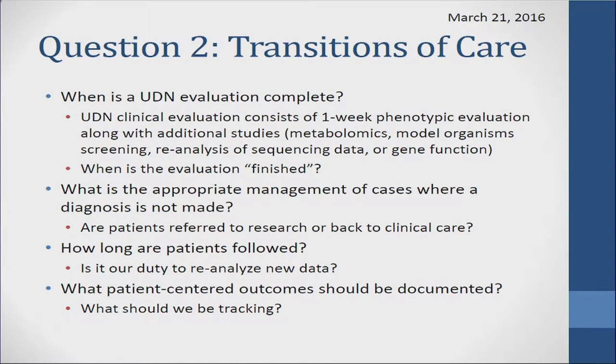Our first question is: when is a UDN evaluation complete? We've spent a great deal of time talking about the intensive clinical evaluation, and we'd like to reiterate that the UDN evaluation consists of a one-week phenotypic evaluation with some additional studies, such as metabolomics, model organism screening, reanalysis of sequencing data, or gene function. More importantly, we want to emphasize that this one-week phenotypic evaluation is what makes the UDN unique. As we move into Phase II, is this the model we want to keep? At what point is the evaluation finished and care is transferred back to the primary home care?